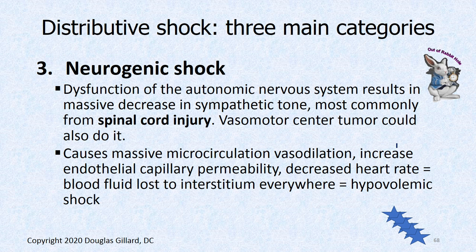Neurogenic shock is a problem with the autonomic nervous system — the number one cause is spinal cord injury where sympathetics are taken out of action. There's a balance between nitric oxide and sympathetic outflow to keep the microcirculation lumen just right to properly pressurize the capillaries. If you have a spinal cord injury and lose the sympathetic input, nitric oxide rules — you vasodilate the microcirculation, capillary permeability increases, you lose blood fluid into the interstitium, can't return it, and there goes your pressure. Your blood volume is gone and you go into shock.